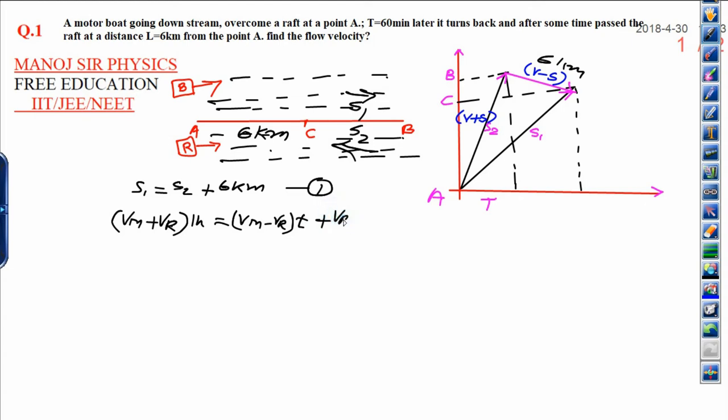6 kilometers can be written as velocity of the raft into 1 hour, that is the total time, and the return time is T. When you simplify, you will get Vm plus Vr equals Vm times T minus Vr times T plus Vm times T minus Vr times T plus Vr plus Vr times T.